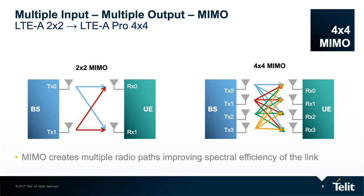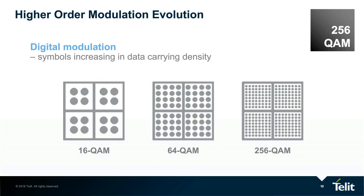Higher order MIMO is also being used for trials, but the focus in the industry right now is on 4x4 because it is commercially available on devices at a reasonable cost. This slide covers the higher order modulation evolution — it increases the number of bits that can be carried per symbol. The trade-off is that this approach is more susceptible to noise, but when a system is trying to achieve the best throughput, there is always a trade-off, and the network will downscale if required.